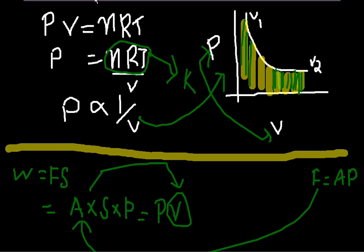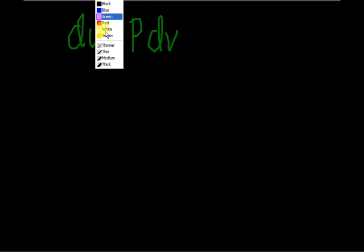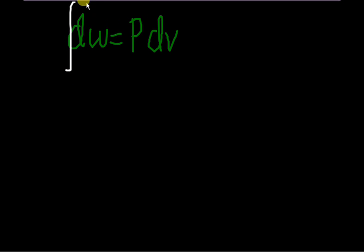For a small work done, DW can be written as pressure into a small volume DV. In order to find the total, we have to integrate this, applying V2 and V1 as limits. So, just integrating it in order to find the total work.